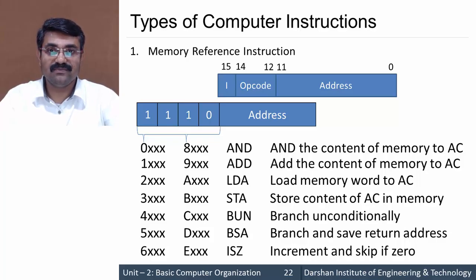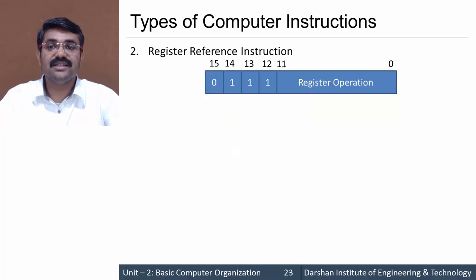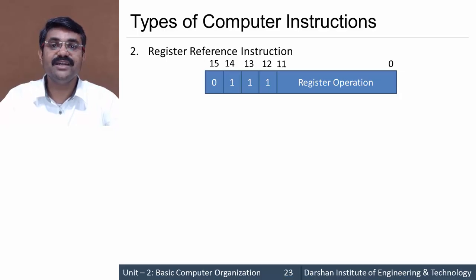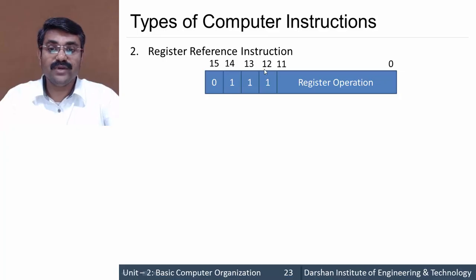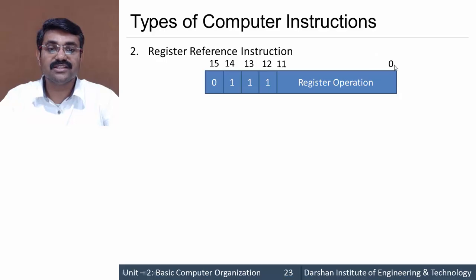Those are all memory reference instructions. The second type is register reference instructions, which perform operations on registers. The format specifies that bits 0 to 11 (12 bits) decide the register operation, while bits 12 to 15 are fixed as 1110 for all register reference instructions. Only the lower 12 bits change to decide which operation is performed.